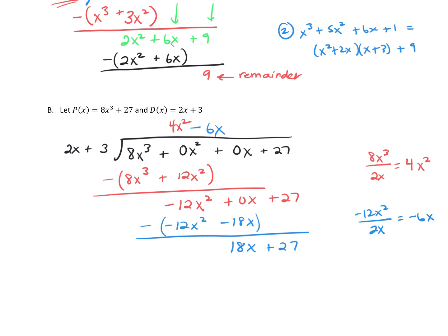We carry down the 27, giving us 18x plus 27. Take the leading term 18x divided by 2x: 18 divided by 2 is 9, and x divided by x is 1, so we just have plus 9 on top. Multiply 9 through 2x plus 3: 9 times 2x is 18x, and 9 times 3 is positive 27. Subtract: 18x minus 18x is 0, and 27 minus 27 is 0. No more terms to bring down, so there is no remainder.